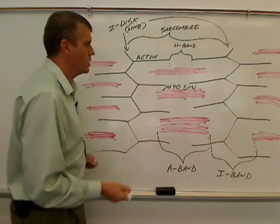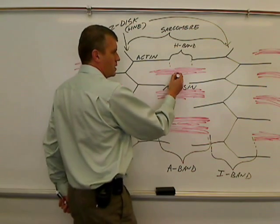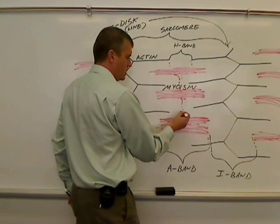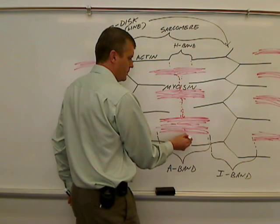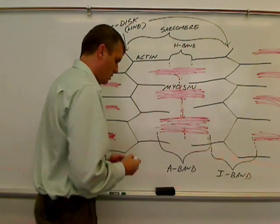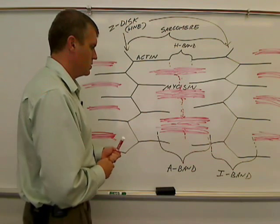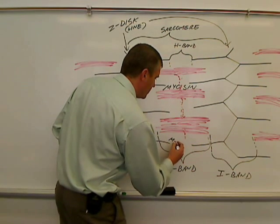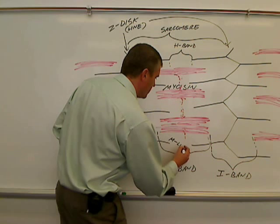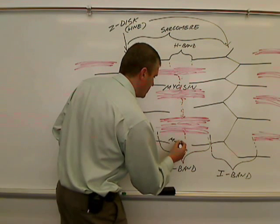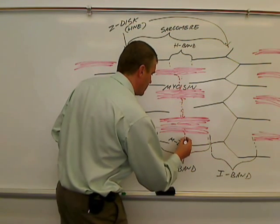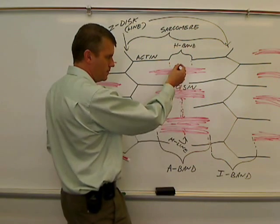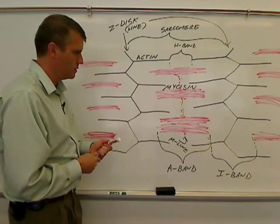The myosin proteins are actually connected to each other, and I'll represent that with dashed lines. And that creates what's called the M-line going up through the myosin.